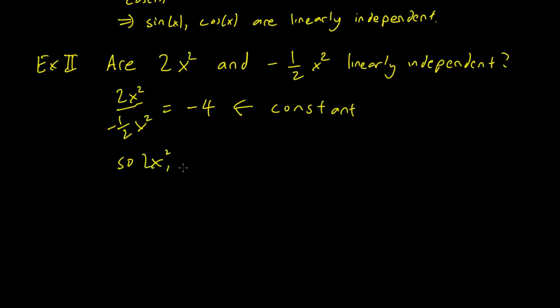So 2x² and -½x² are not linearly independent. This is because 2x² is -4 times -½x², which is a constant multiple. So this is not linearly independent. So it's typically easy just to look at the two functions and tell whether they are linearly independent.